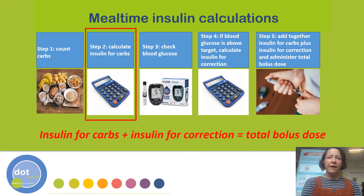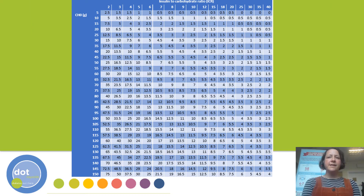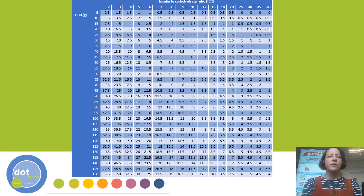After you have calculated the carbohydrate content of what you or your child is about to eat, the next step is to decide upon how much insulin needs to be administered to cover that carbohydrate. This is an example of a ready reckoner table, which we can provide on either paper or an electronic version. Down the side is the carbohydrate axis, and across the top is the insulin to carbohydrate ratio — the ICR which relates to that particular meal.